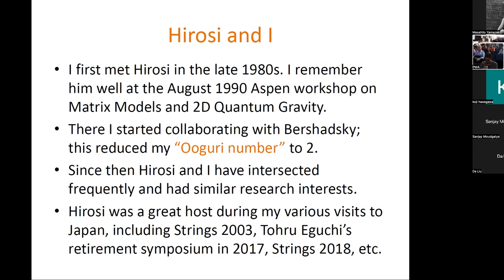For me, 1990 was in many ways a kind of turning point year. Just as 1990 began, I started working on a large-N matrix model, in particular the C equal one matrix model. In fact, the compact C equal one matrix model with David Gross. And then we pretty quickly realized it's a hard problem because there is this singlet sector and then there is a non-singlet sector.